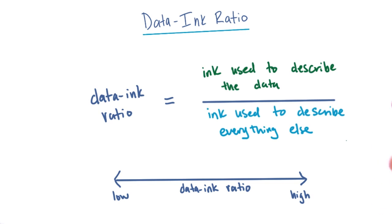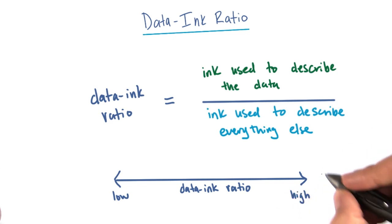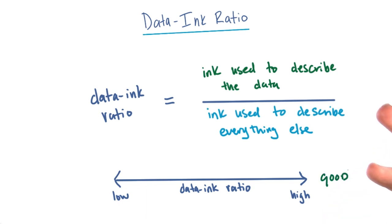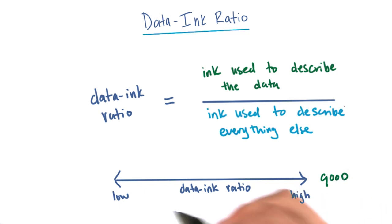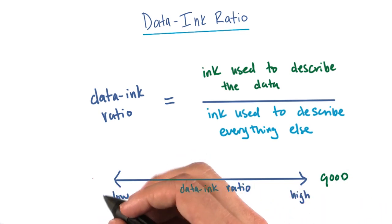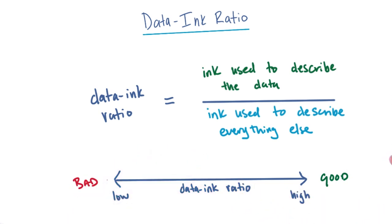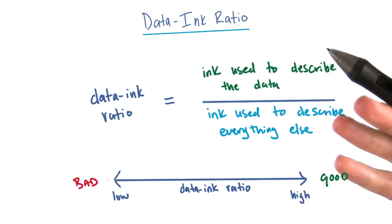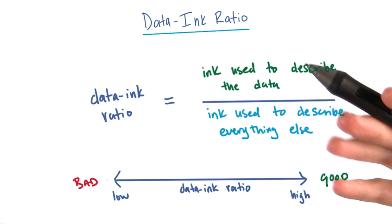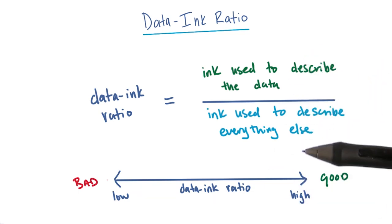So what is a good data-to-ink ratio? Typically, we think of high data-to-ink ratios as being very good — it means that a large portion of the ink used in a visualization is used to describe the data points themselves. A low data-to-ink ratio is usually very bad and describes a visualization in which the majority of the ink is not used to describe the data, but is actually describing something else.